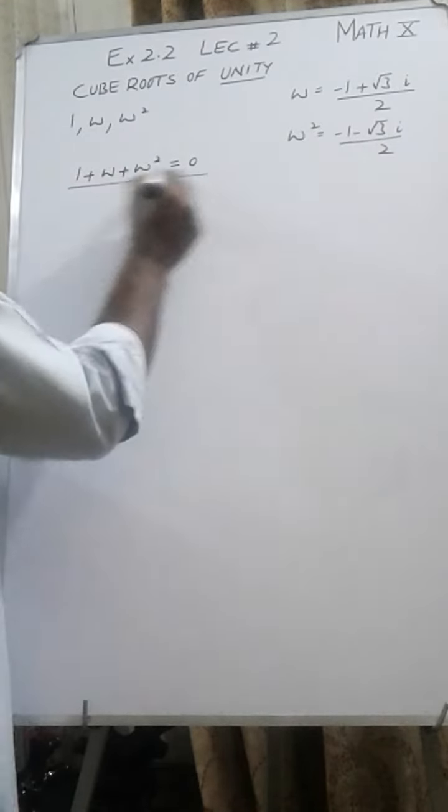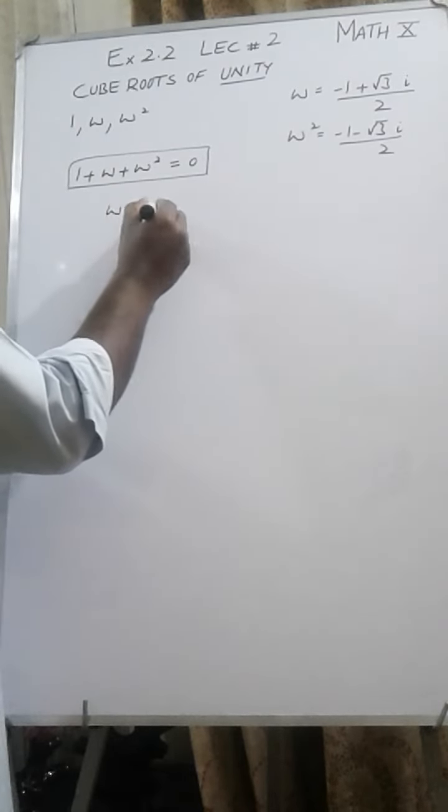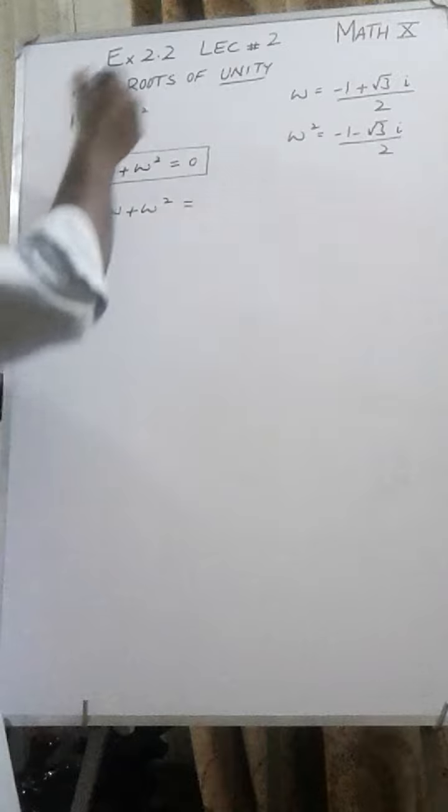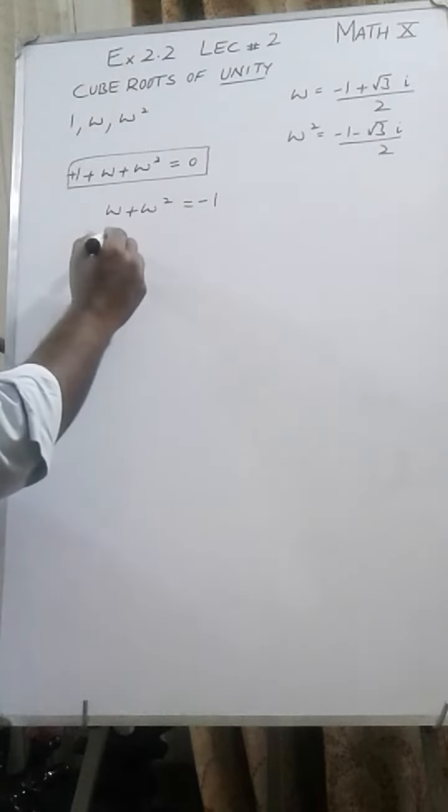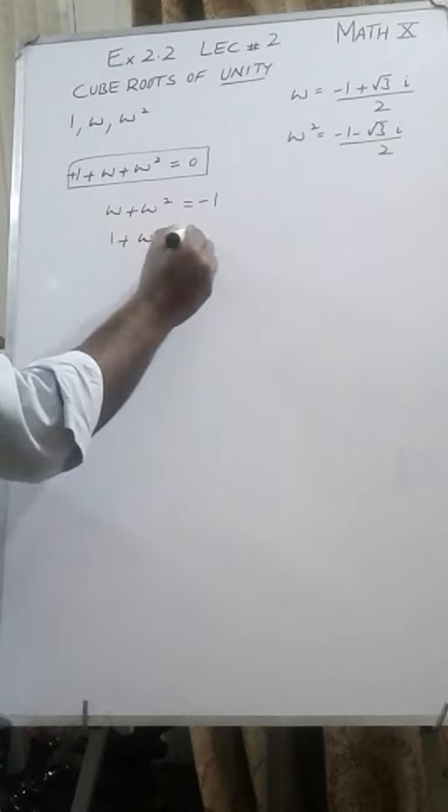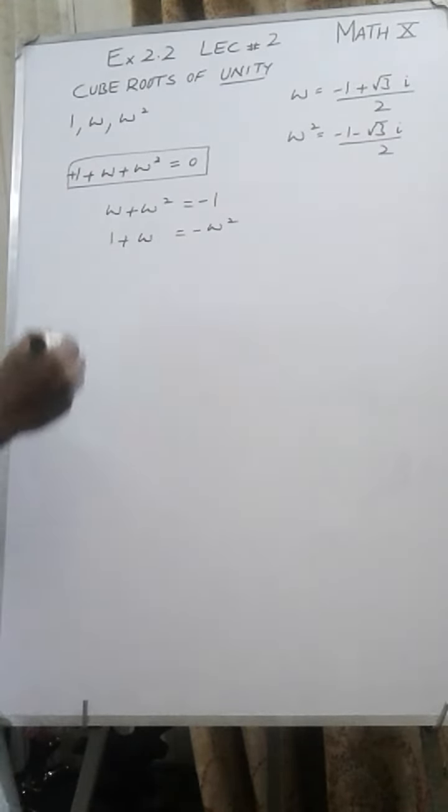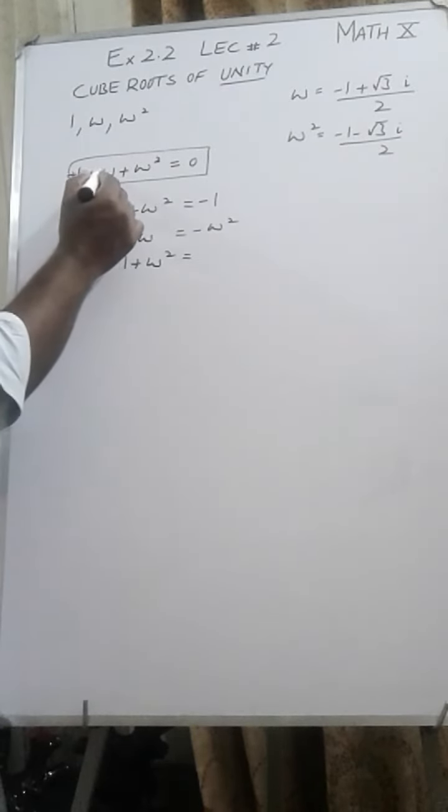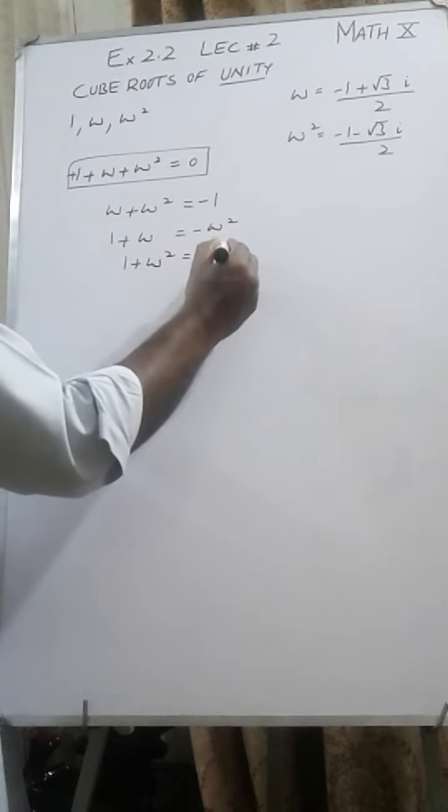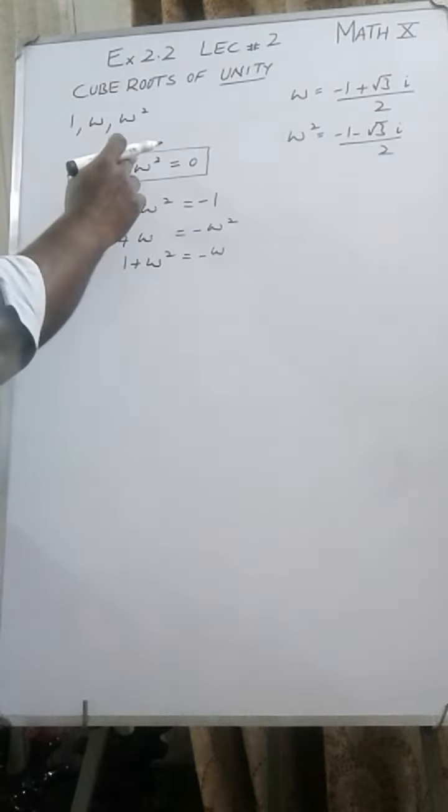From this basic equation, if I write just ω + ω², this plus one will be shifted to the other side and will become -1. Similarly, if I write 1 + ω, omega square is shifted over here with the minus sign. Similarly, if I write 1 + ω², according to this equation, this omega will come to the side: -ω. So from this basic formula, these other ones can be derived. That was the sum.